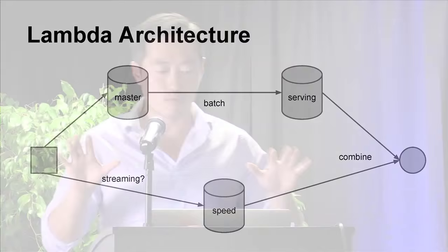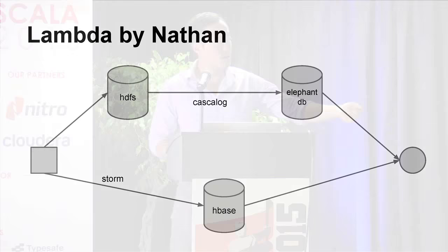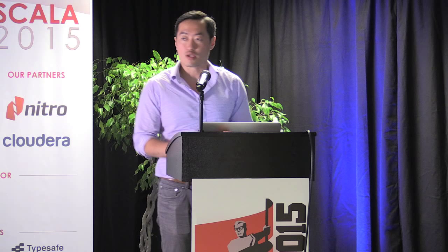Now let's look at examples, including degenerate Lambda architectures that use only one layer. The Nathan Marz Lambda architecture: you dump data into HDFS as your master dataset, process it using Cascalog, and dump results into ElephantDB — that's your batch layer. On the speed layer, you dump data into queues processed by Storm topologies, which dump data into HBase as the speed layer database. When querying, you query both ElephantDB and HBase, combine those results together, and get exactly what you want.